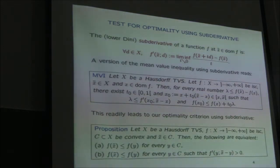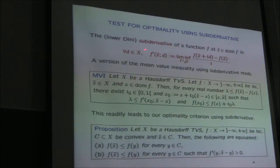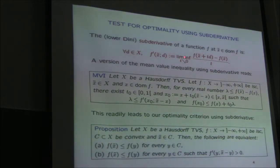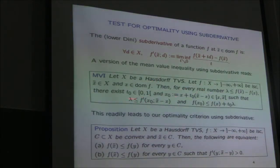The sub-derivative we use is the lower Dini sub-derivative, also called the radial sub-derivative. For this, we have a simple mean-value inequality, but here it is a mean-value with a sharp condition — it is necessary to have this to get the result.